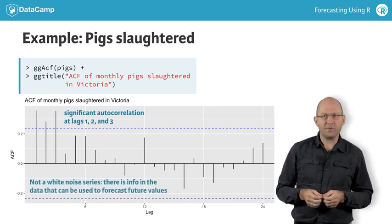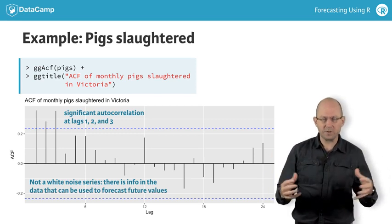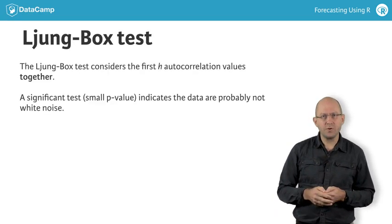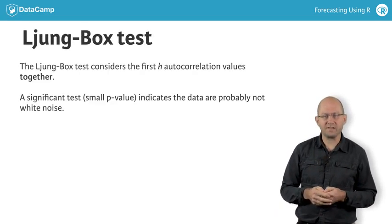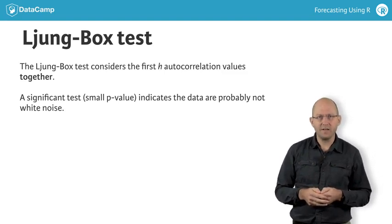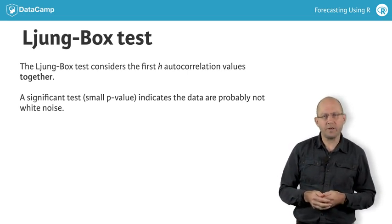Looking at an ACF is useful, but sometimes it is easy to test all the autocorrelations together, rather than consider each one separately. To do this, you can use a Ljung-Box test. It considers the first H autocorrelation values to see if they, as a group, look like what you would expect from a white noise series.